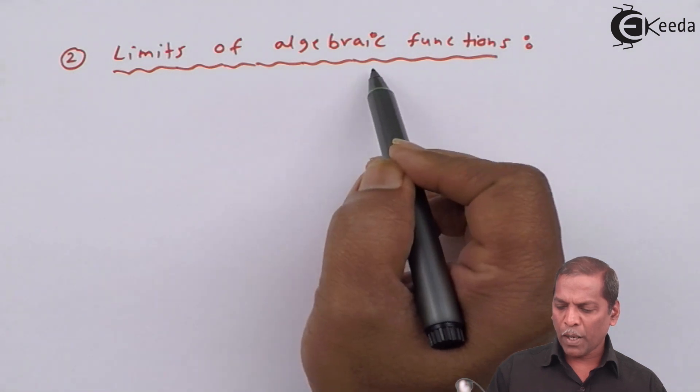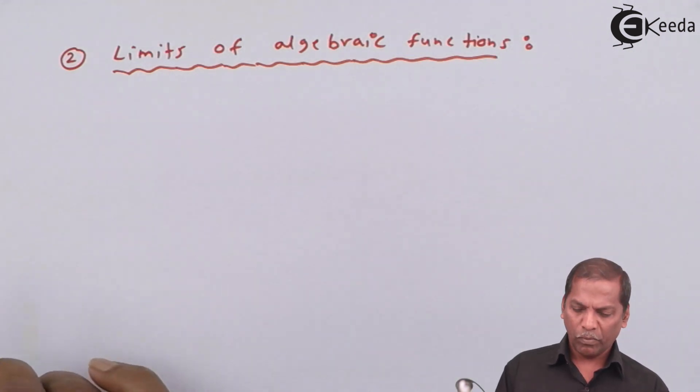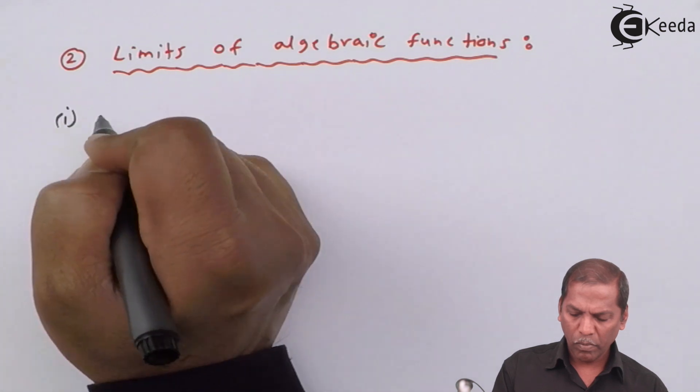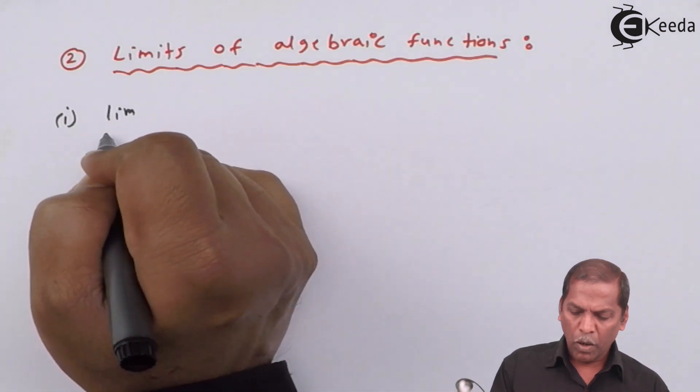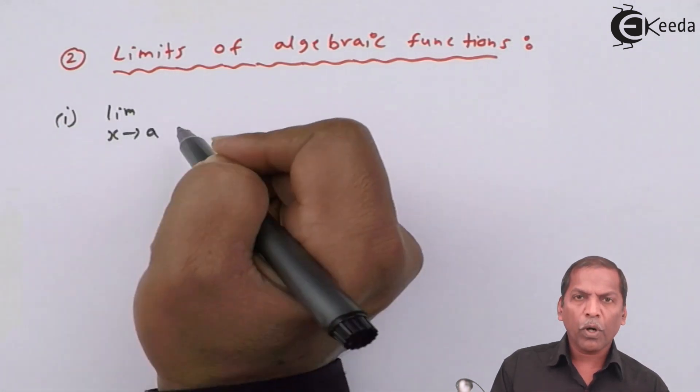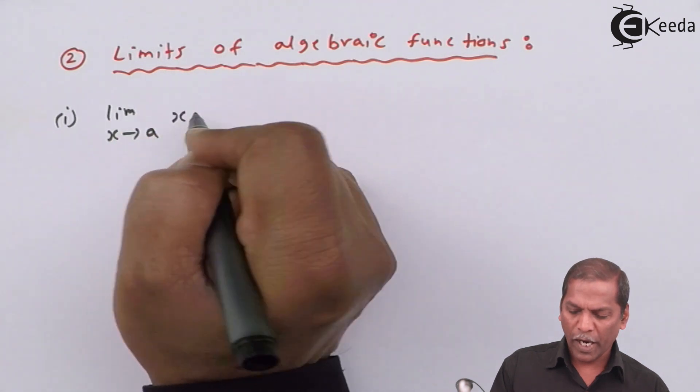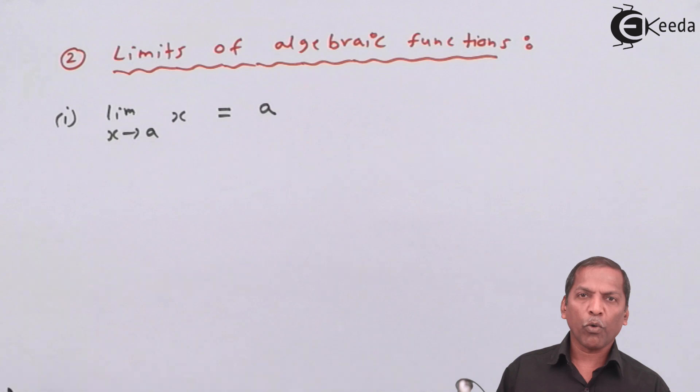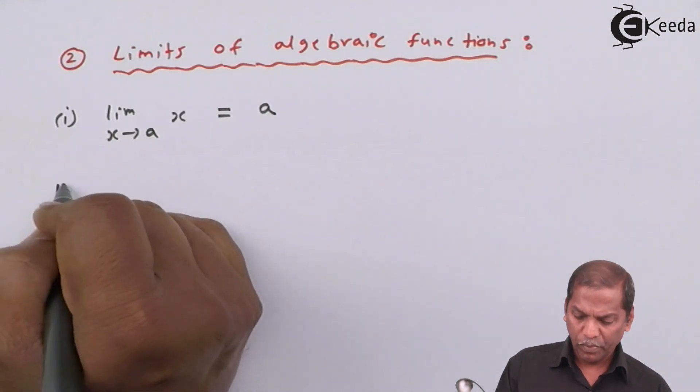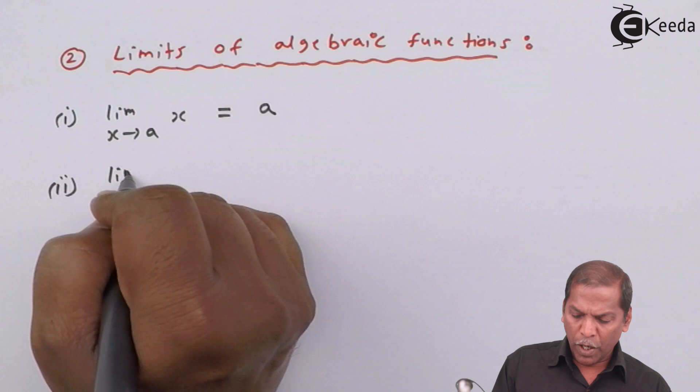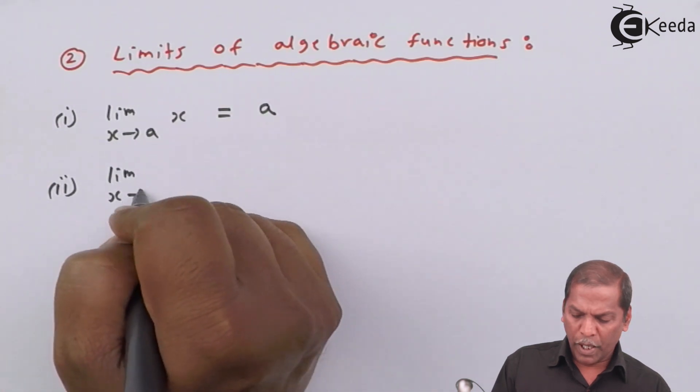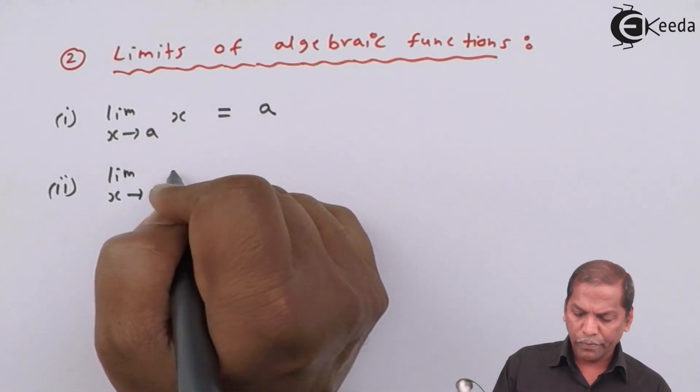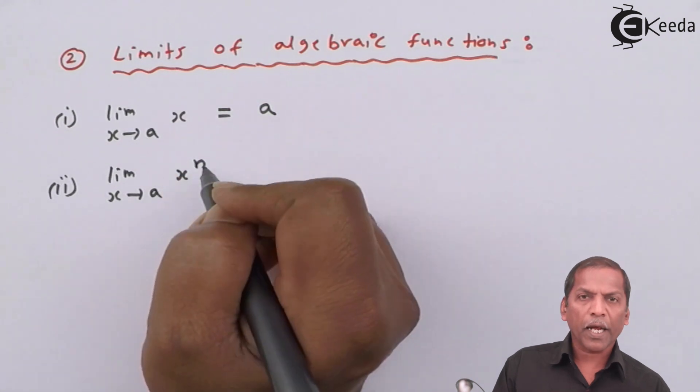Limits of algebraic functions. Number one: limit x approaches a of x equals a. Number two: limit x approaches a of x raise n equals a raise n.